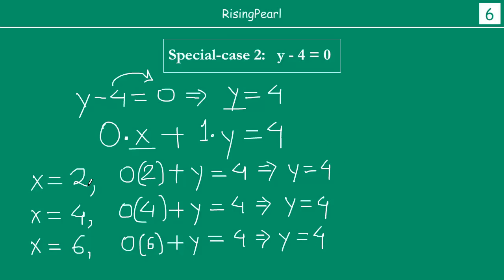So no matter what we are taking for x, we are always getting y equal to 4. Now dosto, again, if we have to graphically plot this, we have to create our table. This one will give us x is 2, y is 4. This one will give us x is 4, y is 4. And this gives us x is 6, y is 4.